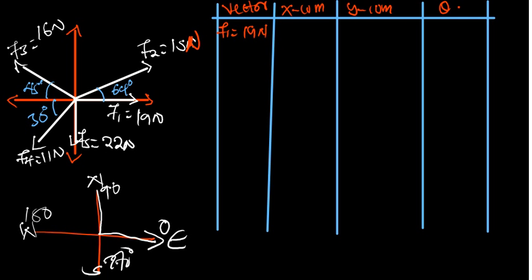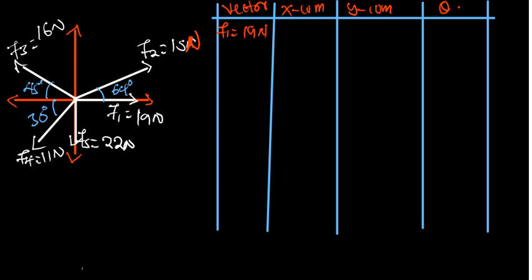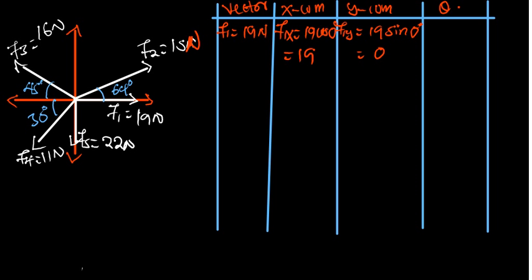Since F1 points east, the angle is zero degrees. So F1x = 19 cos(0°) = 19. For the y-component, F1y = 19 sin(0°) = 0. The angle we record in the theta column is zero degrees. We are done with F1.